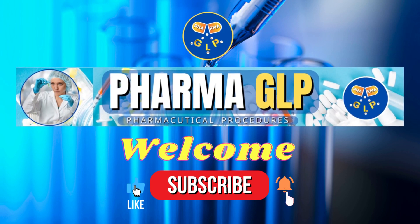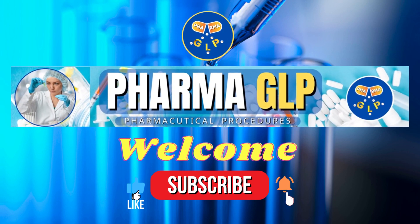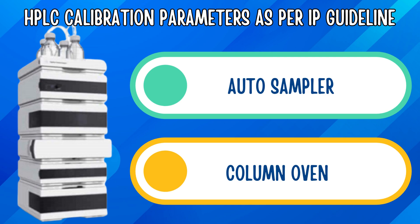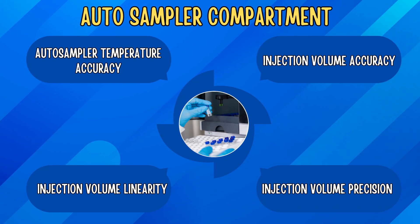Hello everyone, welcome to Pharma GLP. In this video, we will discuss autosampler and column oven calibration parameters as per IP guideline. For calibration of autosampler, the parameters are injection volume accuracy, injection volume precision, injection volume linearity, and autosampler temperature accuracy.